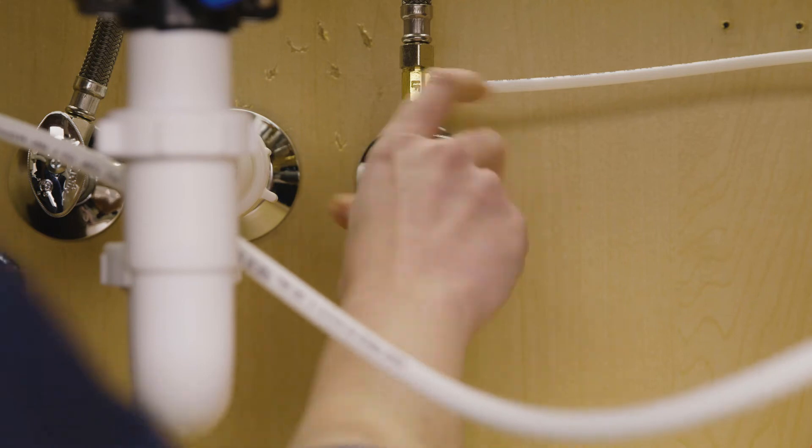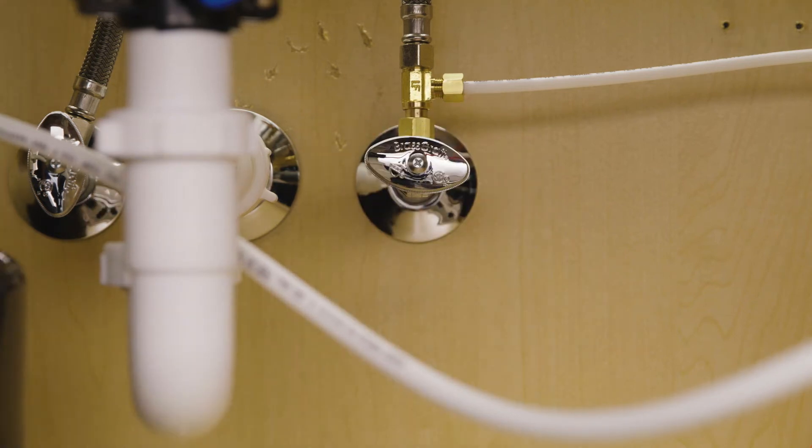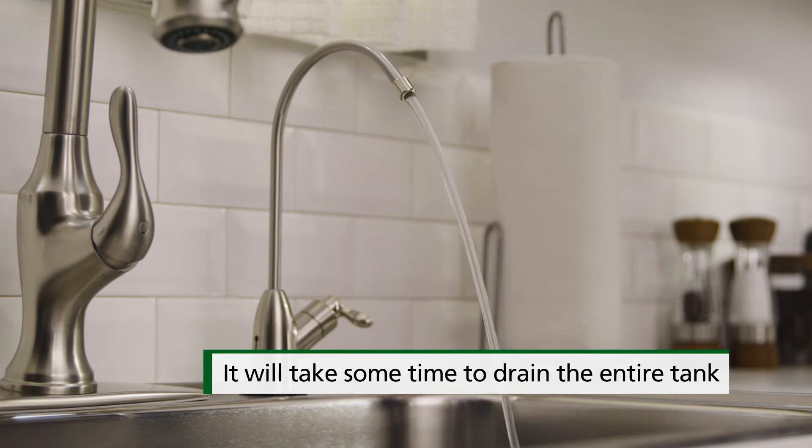First, turn off the cold water valve under the sink and release the pressure from the system by turning on the dedicated faucet.